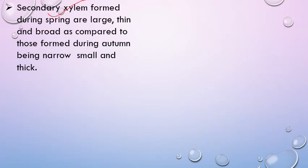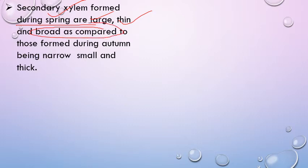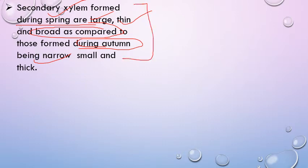Secondary xylem formed during spring: environmental conditions are favorable, so cambium activity is more. It cuts large-size cells with thin walls and broad lumens. In contrast, cells formed during autumn or winter are small in size with thick walls. This differentiation of tissues occurs within an annual ring. Both types of tissues — formed during spring and autumn — combine to form one annual ring.